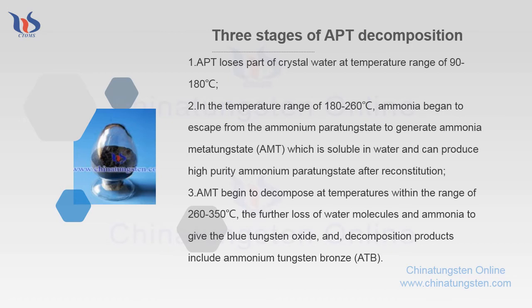Stage 2: In the temperature range of 180 to 260 degrees Celsius, ammonia begins to escape from the Ammonium Paratungstate to generate Ammonium Metatungstate (AMT), which is soluble in water and can produce high purity Ammonium Paratungstate after reconstitution.